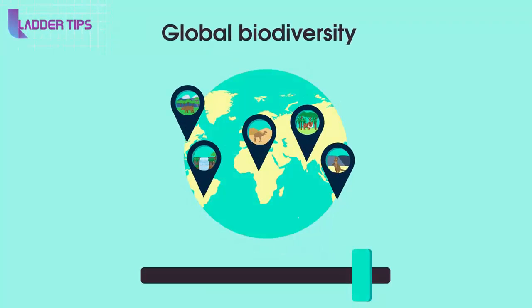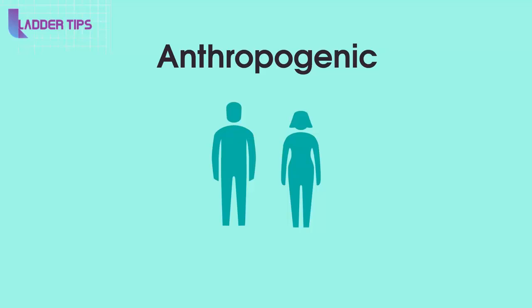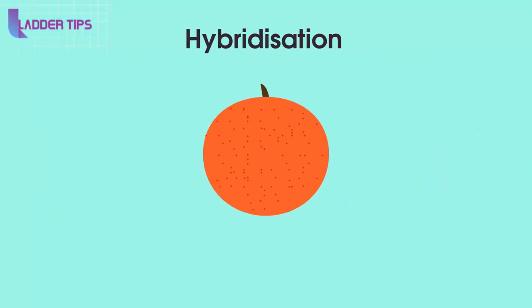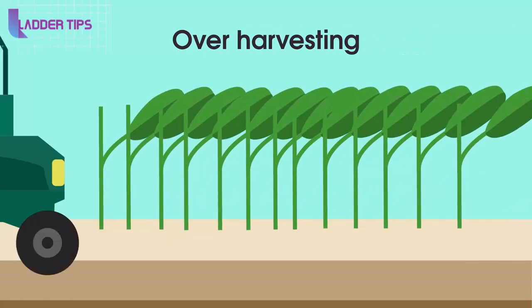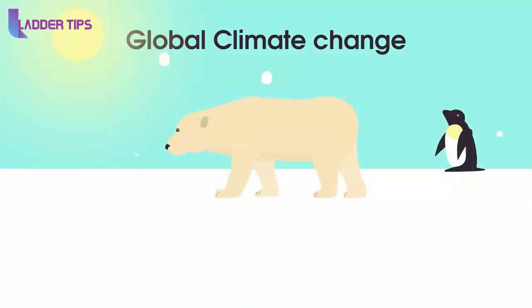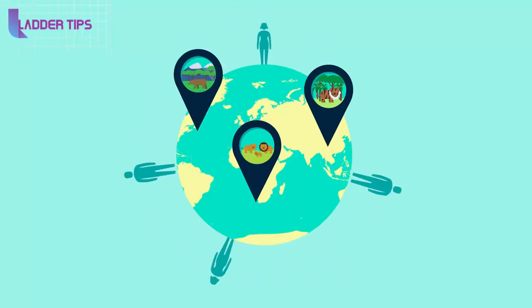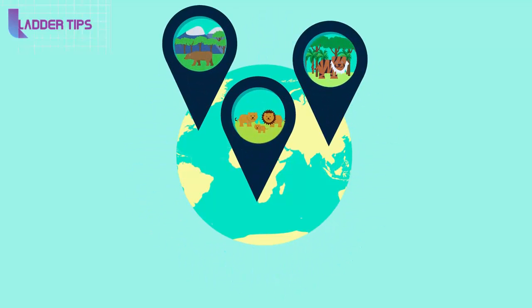There are many proposed reasons for the current drop in biodiversity. Some of those reasons are anthropogenic, meaning caused by humans. Anthropogenic factors include things like introduced or invasive species, such as the introduction of rabbits to Australia, human-induced hybridization such as in plants to create optimal species of crop, over-harvesting of resources, and global climate change caused by human activities. While humans aren't responsible for all of the current extinction events, there is good evidence to suggest that humans are affecting the world on a global scale and causing the loss of many important species.